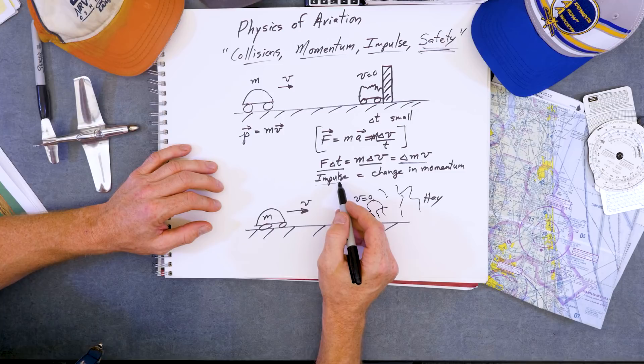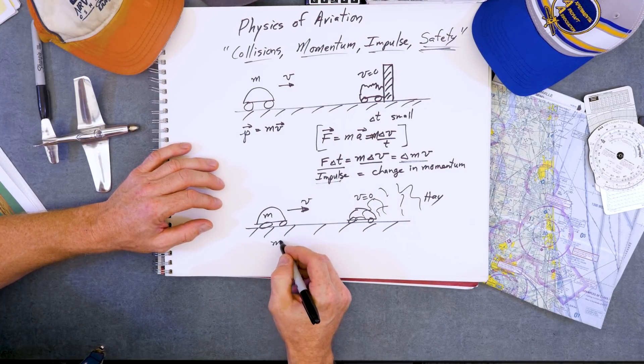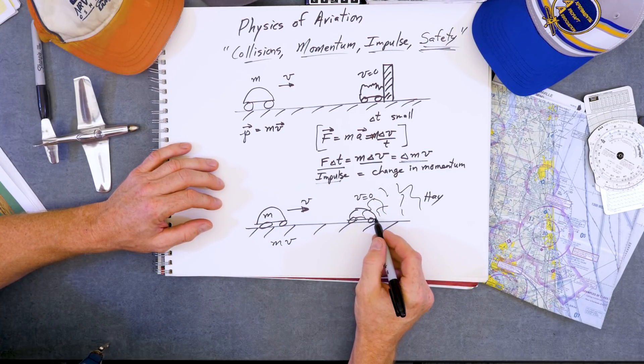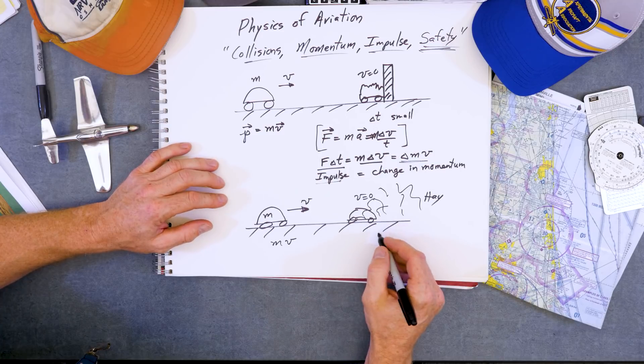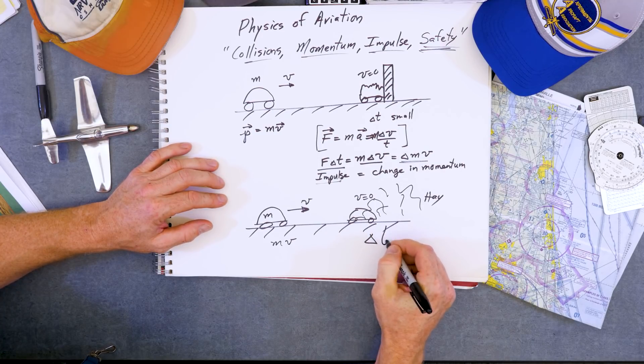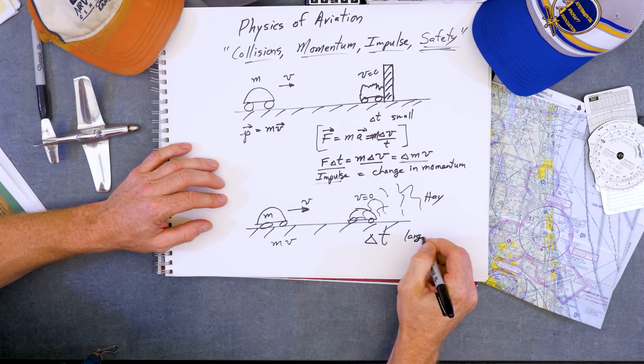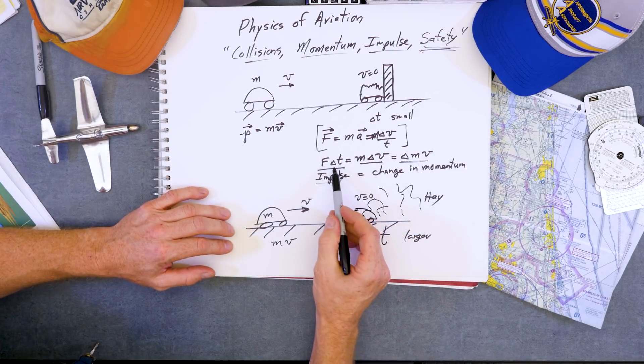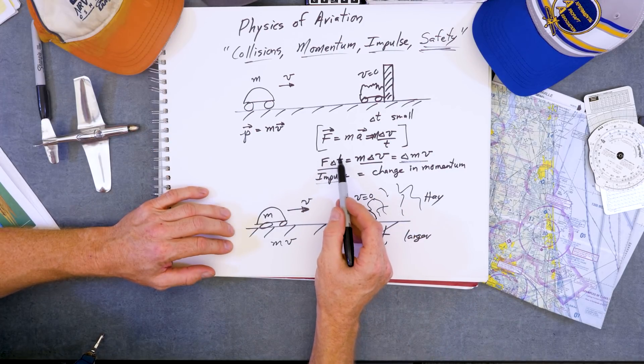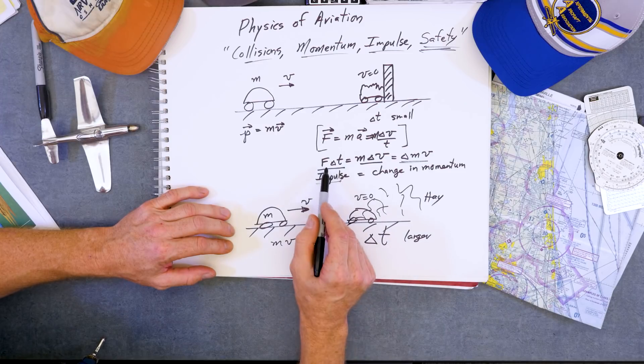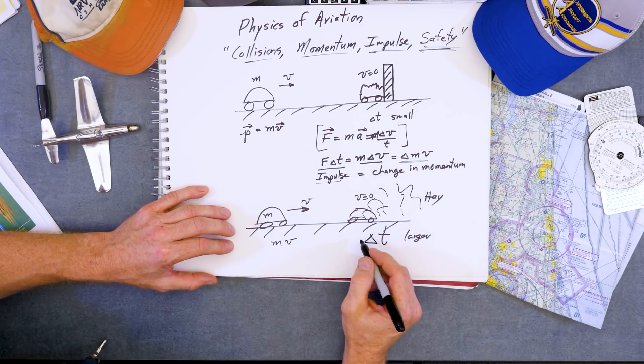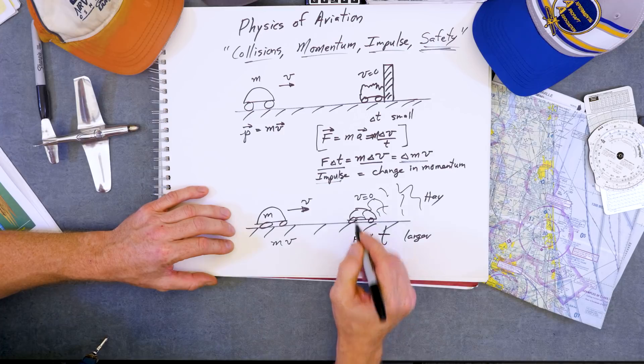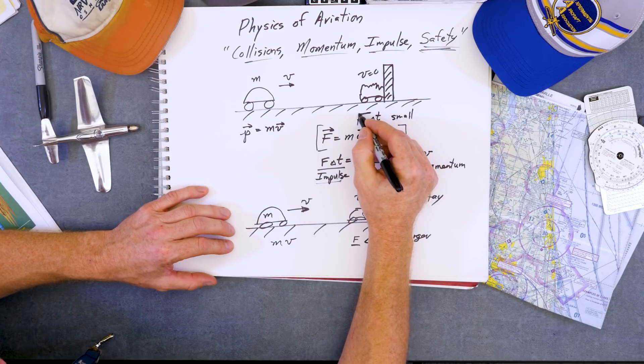However, here the variable that changes is the time. Our delta T here is a much larger time. Aha, what must be true then in order to keep these total impulse the same in both cases, the force must be much lower. So we have a much more smaller force on impact, a much huger force on impact here.